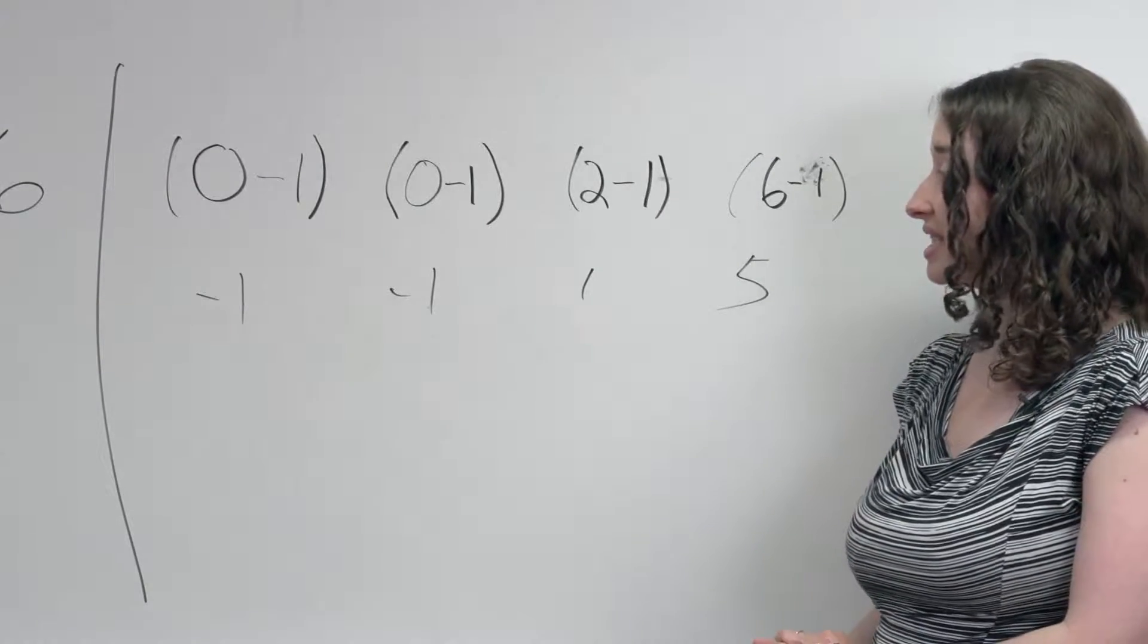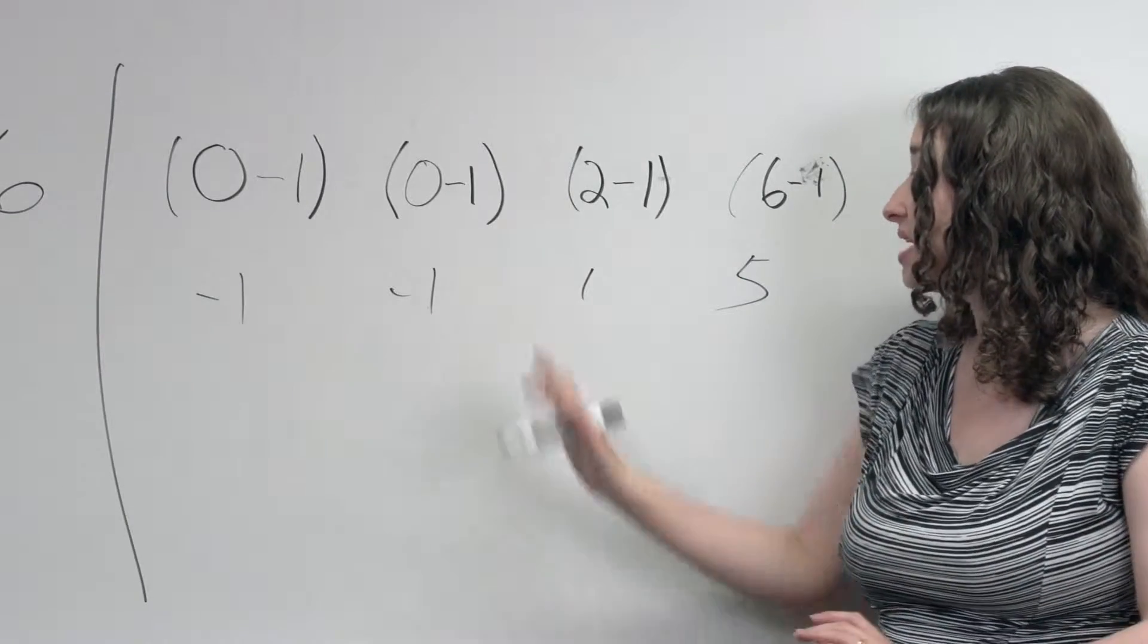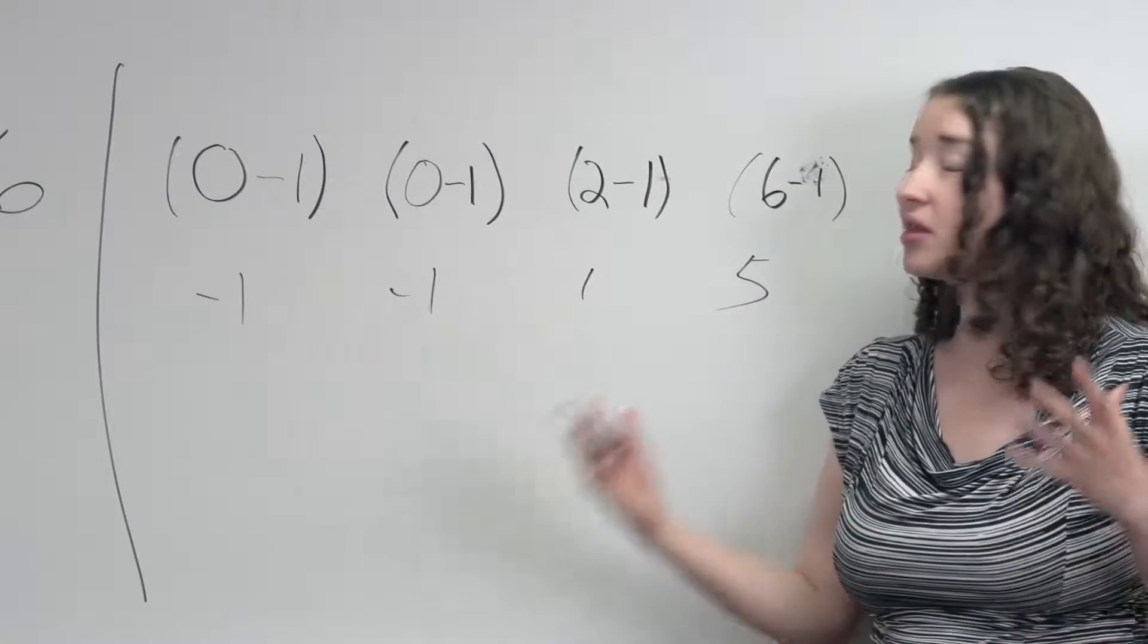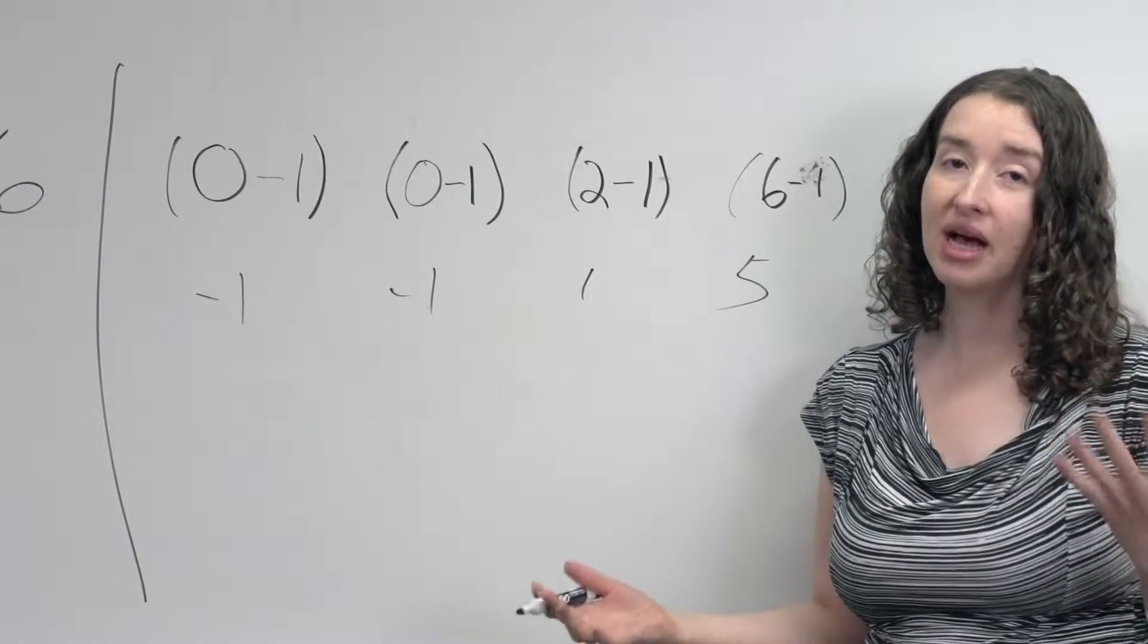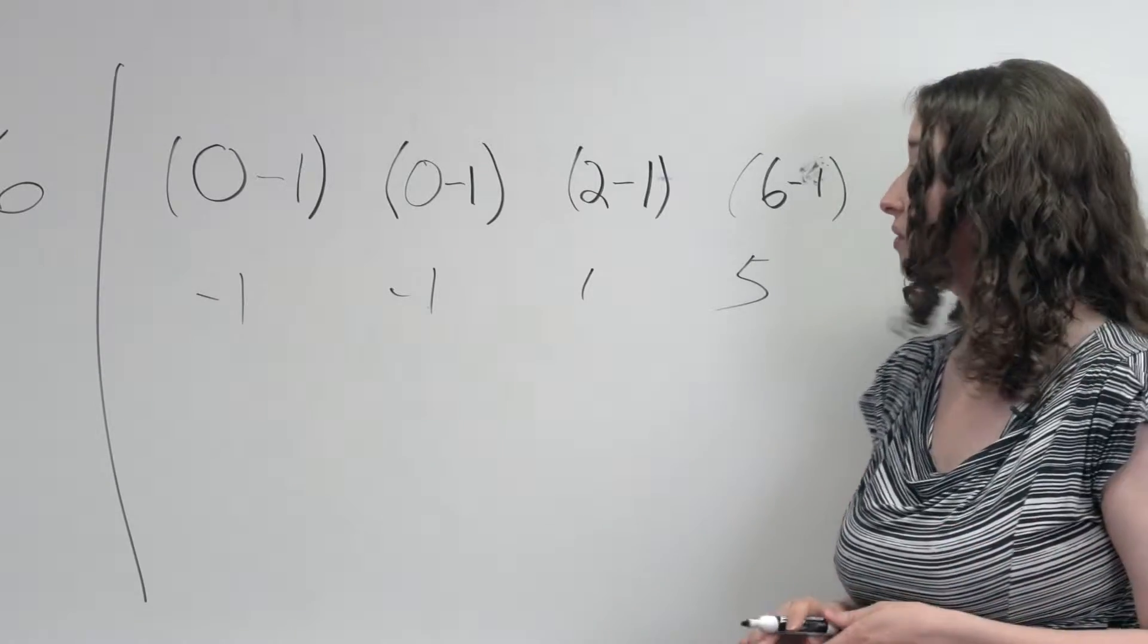The problem is that if we just add them together, if we were to take the mean of these for example, or even the median, if we take the median of these, the low numbers, the negative numbers, and the positive numbers, or the low and high numbers, the negative and positive numbers, are going to cancel each other out.